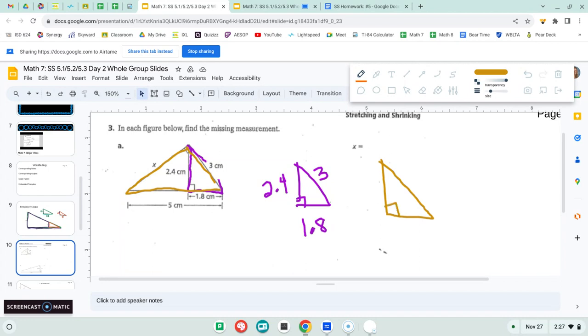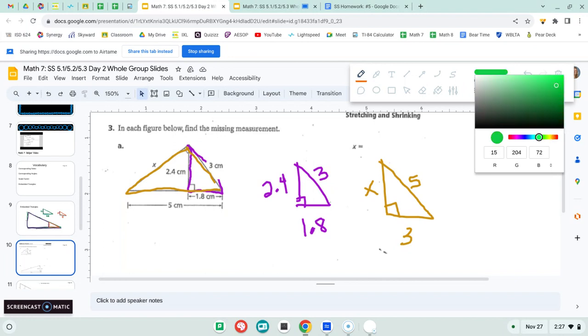So notice that I also changed that it was the same direction as the purple triangle. So I'm going to have X here, three on the bottom, and then the big side five here. Now this should look very similar to the problems we've been doing in class.